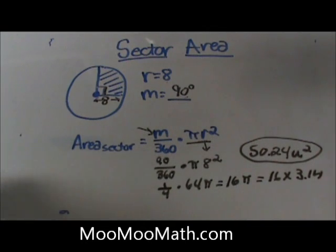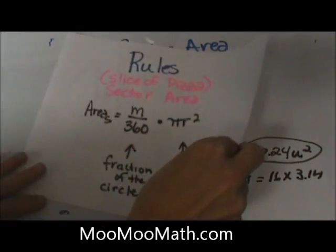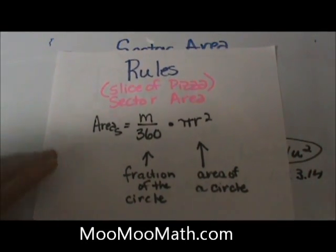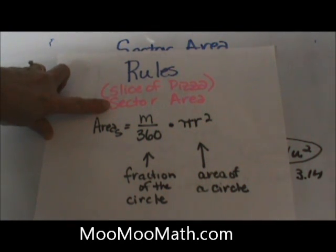So that's how you find sector area and where the formula comes from. Let's just go over the rules one more time. The rules for sector area, and a good way to think about sector area, it's kind of like a slice of pizza. It's one fraction or one part of the circle.